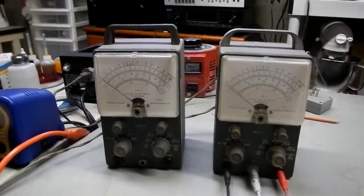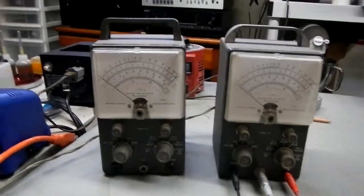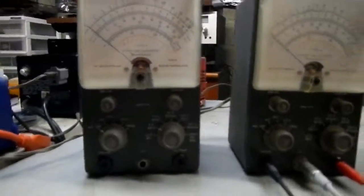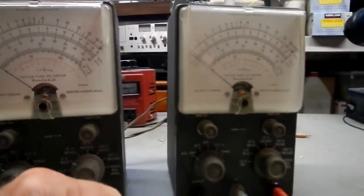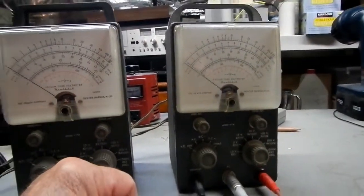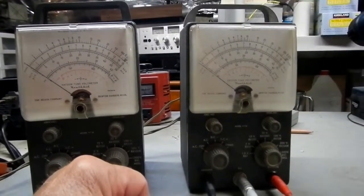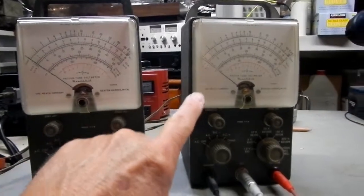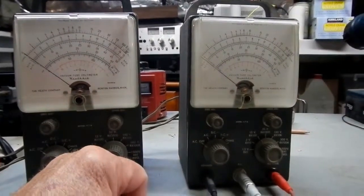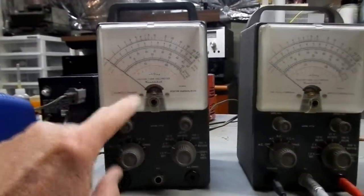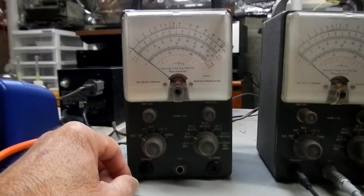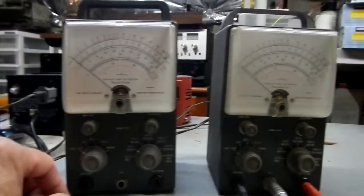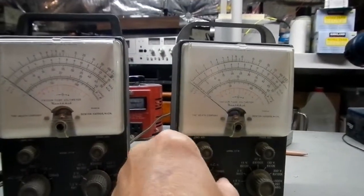I just went through and recalibrated my original Heathkit VTVM and the new one that I just received that has the Fetron tubes in it. And I gotta say that the new one seems to be a little bit more stable and accurate than my original one. Maybe this still has some kind of a problem in there that I haven't diagnosed yet, but I kind of like this new one. I like that instant-on.